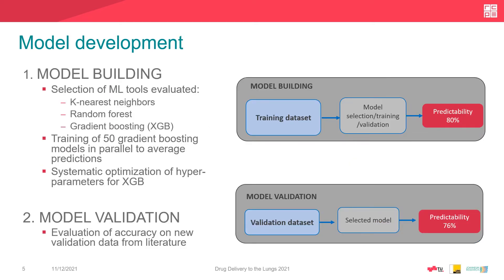Model development was divided into model building and model validation. We selected and tested common machine learning methods: k-nearest neighbor, random forest, and gradient boosting. We decided on gradient boosting as most suitable for our training dataset. We trained 50 gradient boosting models in parallel, averaging the predictions, followed by systematic optimization of hyperparameters. This resulted in a training predictability of 80%, and model validation with the validation data yielded a predictability accuracy of 76%.